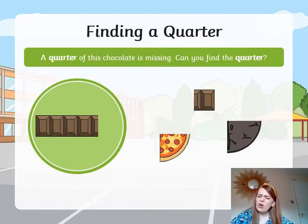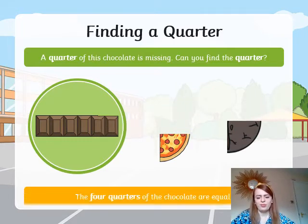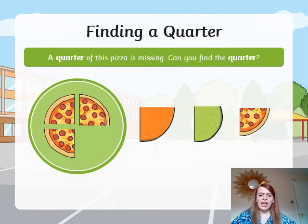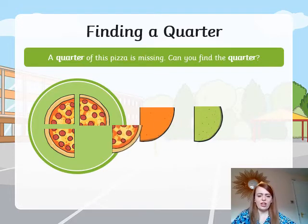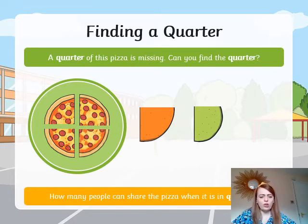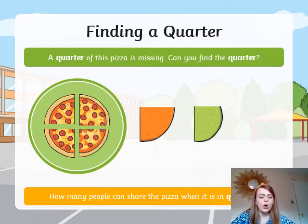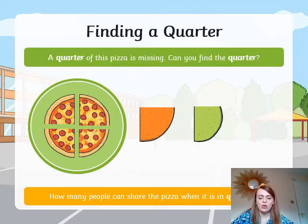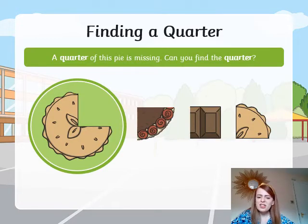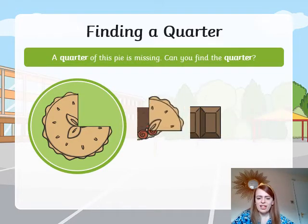Is it going to be this one that's a quarter? No, not that one either. Ah, must be this one. The four quarters of the chocolate are equal. I've got a quarter of the pizza missing — here is the other quarter, and you can see that the four quarters make a whole. It's got a good question here: how many people can share the pizza when it is in quarters? Well, if it's split into four parts then four people can share this pizza — they can each have one equal part. And here, a quarter of the pie is missing — here it is.